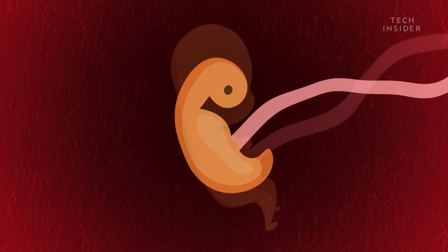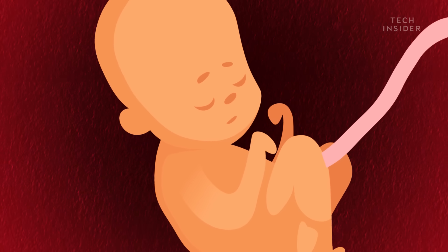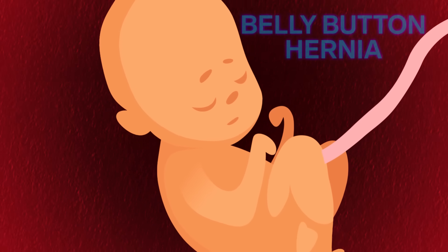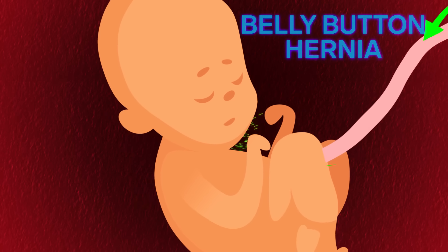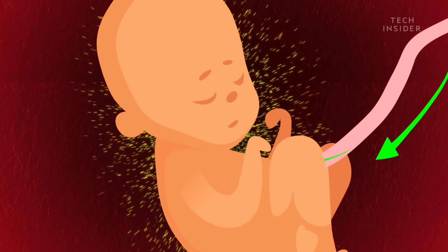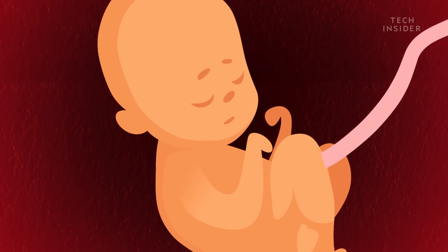While microbes colonize your belly button from the outside, there could also be an invader from the inside. We're talking about belly button hernias. In the womb, the umbilical cord runs from your mom to you, passing through an opening in your abdominal muscles.